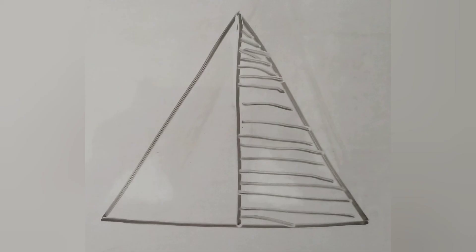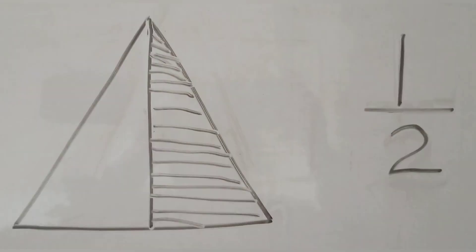Next is a triangle. This triangle has 2 equal parts. Out of the 2 parts, 1 part is shaded. So, we say that the fraction of the triangle that is shaded is 1 half.